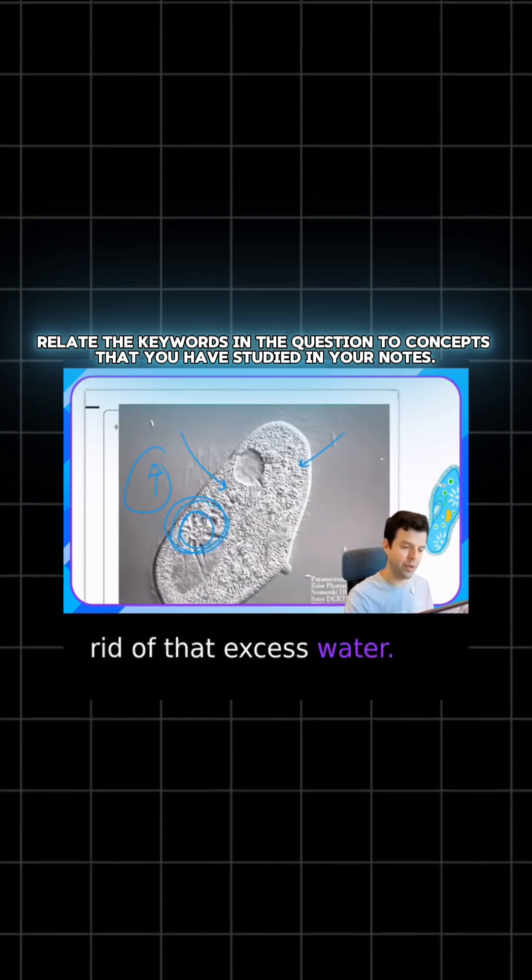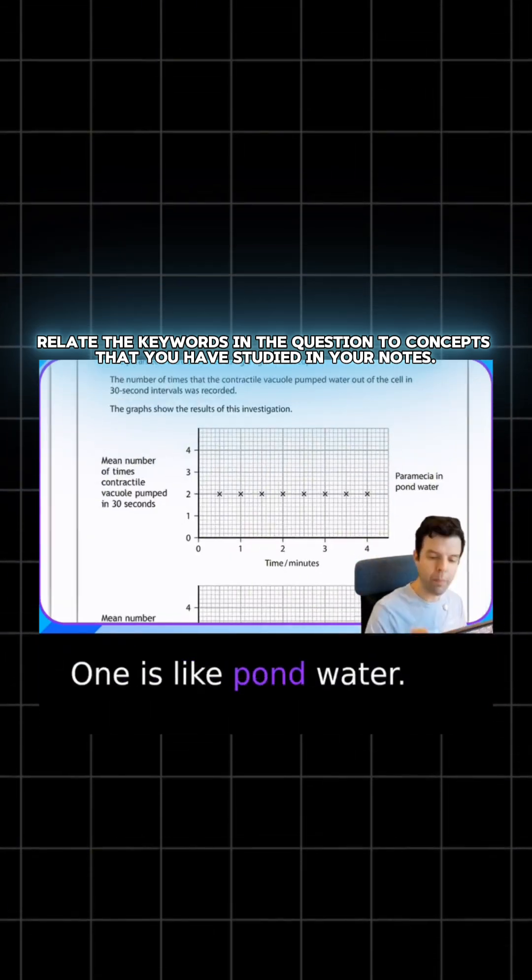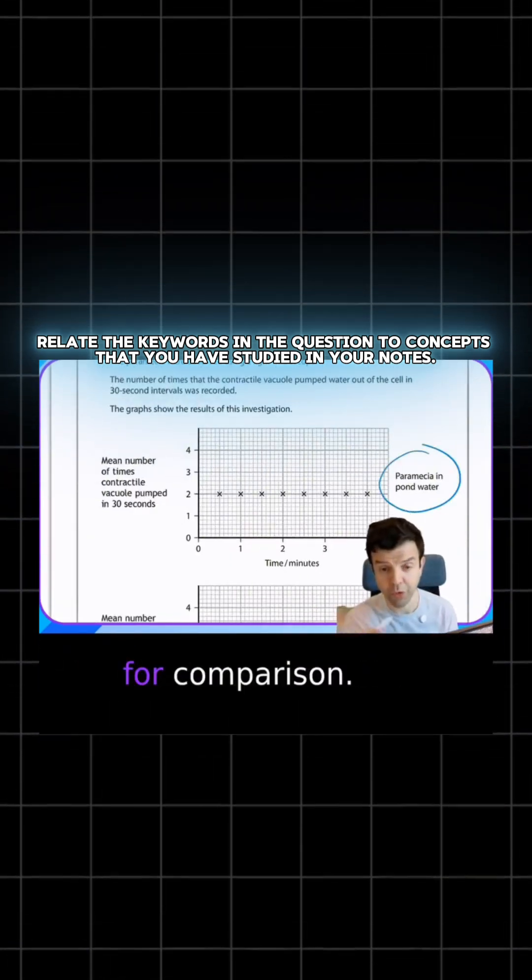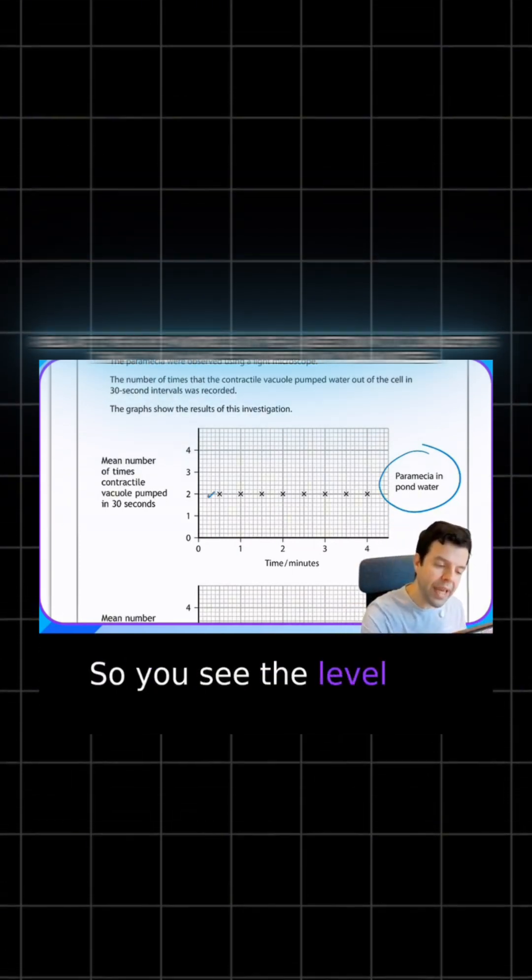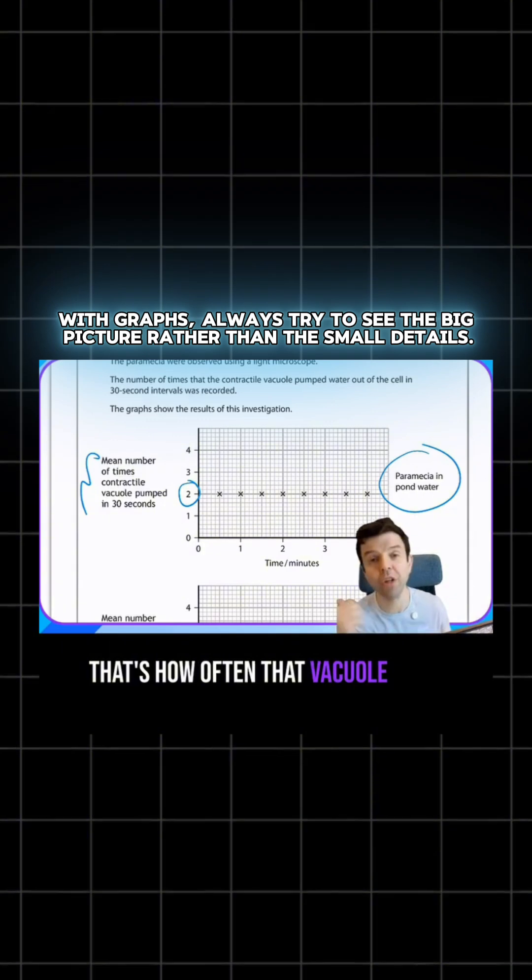They gave me three solutions. One is like pond water - that's a control, just for comparison. You can see the level of activity here is two. That's how often that vacuole has showed you it's pumping water.